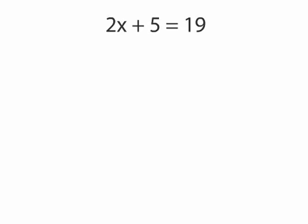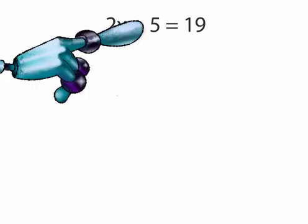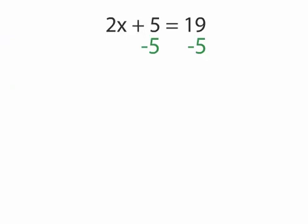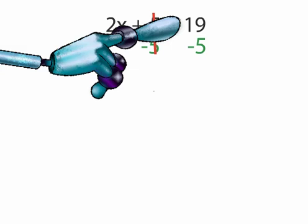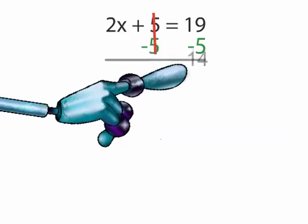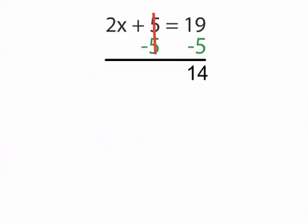In the next equation, 2x plus 5 equals 19, we again want to isolate a single x on one side. So first, let's get rid of this 5. We can subtract 5 from both sides. The two 5s cancel out, and 19 minus 5 equals 14. So we are left with 2x equals 14.